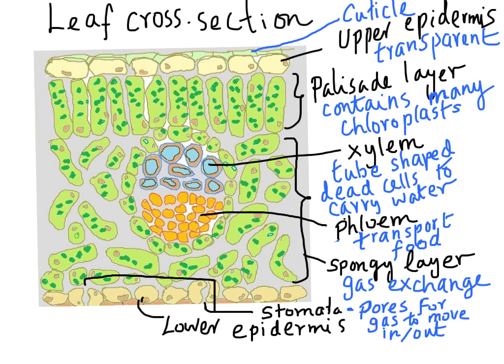You have phloem vessels, which are again tube-like cells, but they are living cells — unlike xylem, which are dead cells with strong reinforced cellulose walls. Phloem cells are living cells that transport food, particularly glucose made in the leaf, to other parts of the plant such as the roots, where it is stored. So phloem transports food.